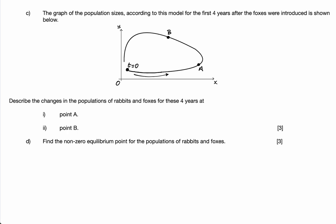I'll do part C and part D in this same video because part C in particular is pretty short. The graph of the population sizes according to this model for the first four years after the foxes were introduced is shown below. I like this question because it gives you a good understanding of how these coupled differential equations work.